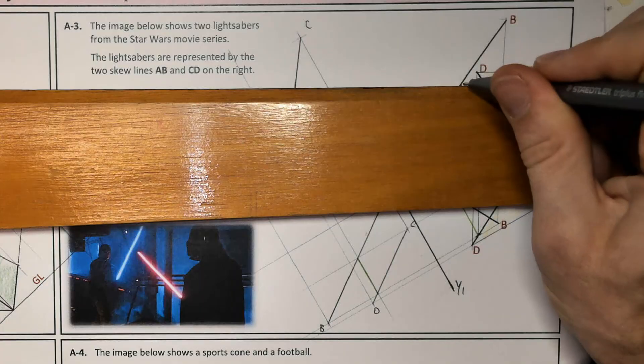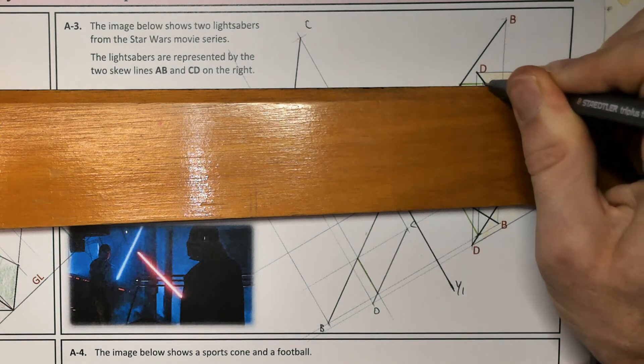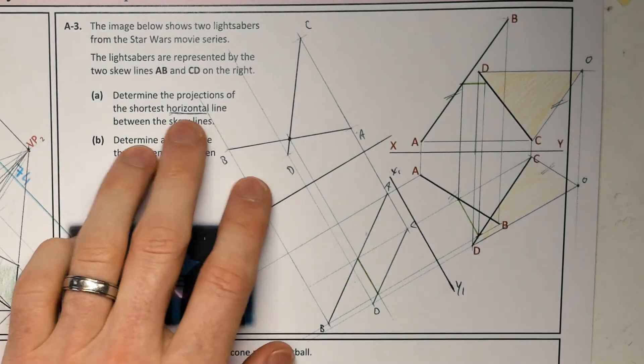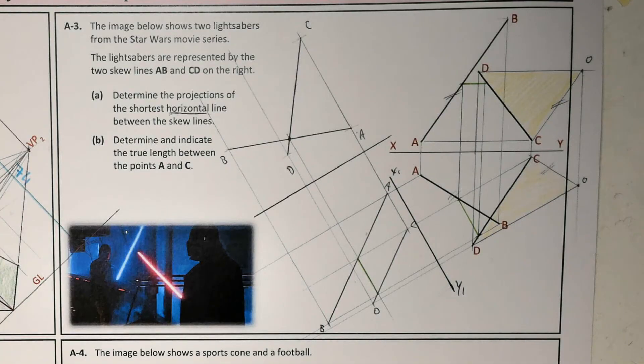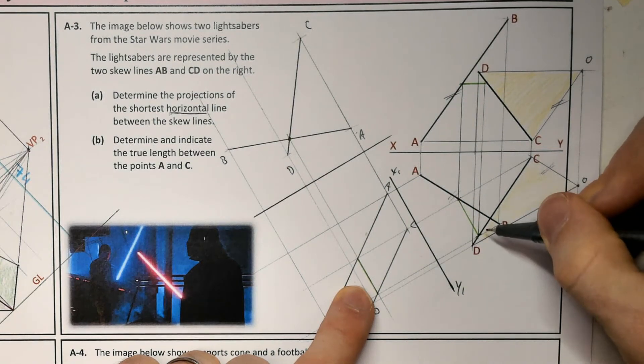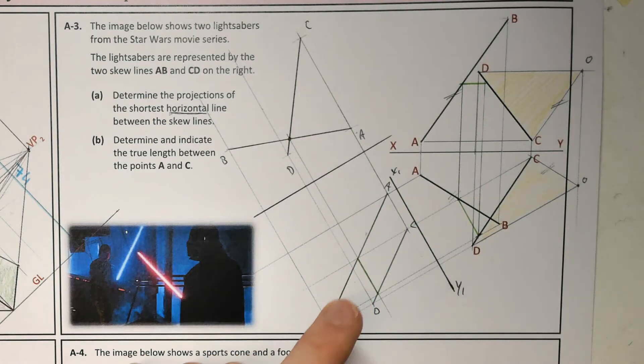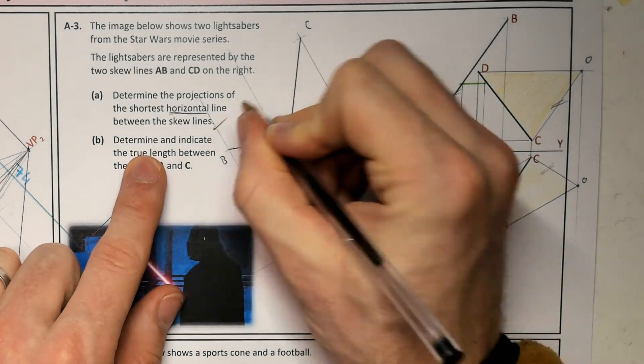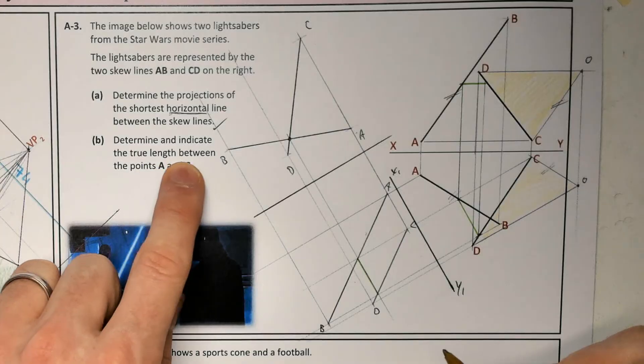They're also asking us to determine it, they want us to indicate where is the shortest distance. So here we're looking down on top of it. That's the shortest horizontal distance, so we'll have to indicate that also. Actually, just reading, they're just looking for determined projection, so we don't have to actually indicate that. So that's part A done.